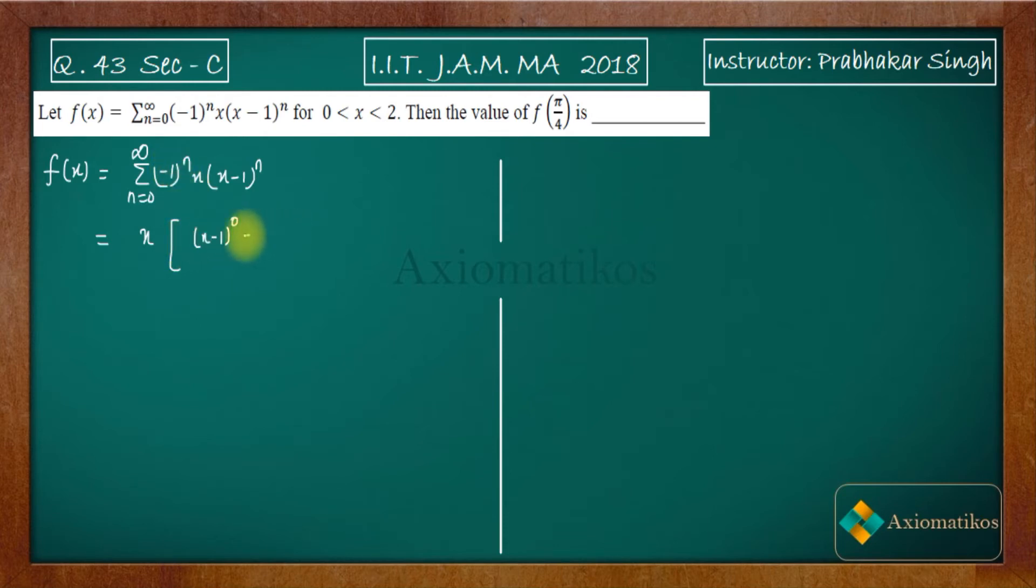Second term will be this. Third term will be this and fourth term will be (x-1)^3 and it is going on like this. Now try to see, your x is in between 0 to 2. So because x is not touching 2, x is strictly less than 2. What is the meaning of this? It means that (x-1) will be strictly less than 1.